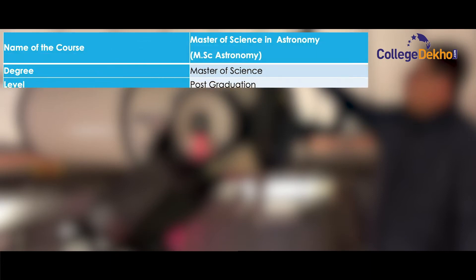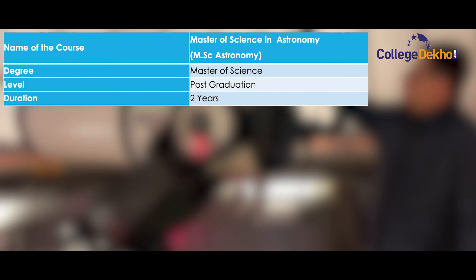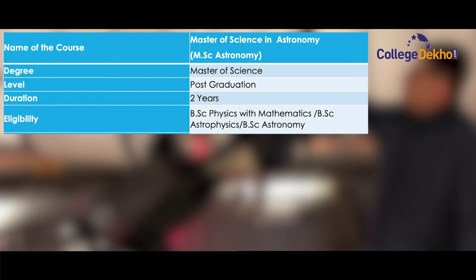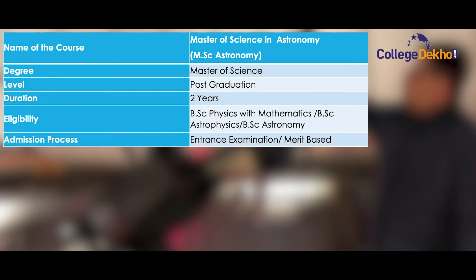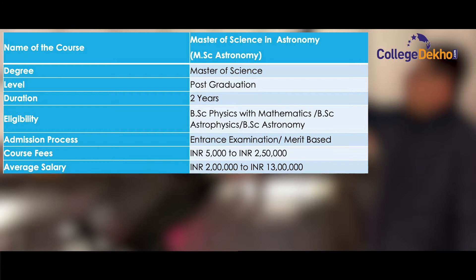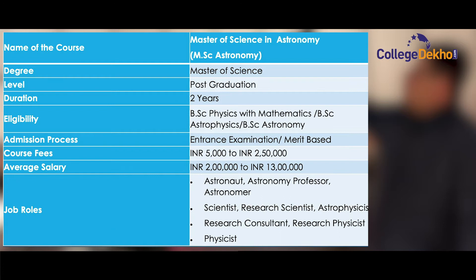MSc Astronomy course highlights: Name of the course — Master of Science in Astronomy. Degree — Master of Science. Level — Post Graduation. Duration — Two years. Eligibility — BSc Physics with Mathematics, BSc Astrophysics, and BSc Astronomy. Admission process — Entrance examination and merit based. Course fee — Rupees 5,000 to 2,50,000 yearly.